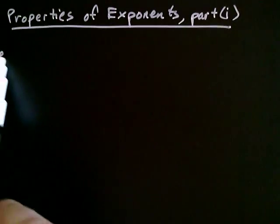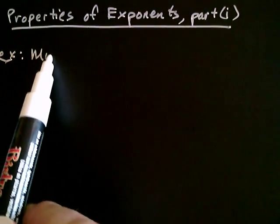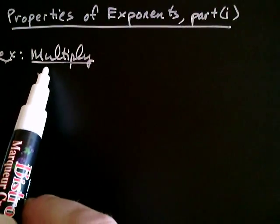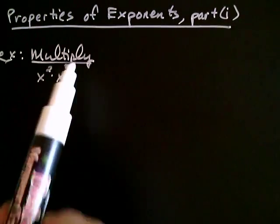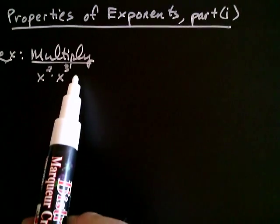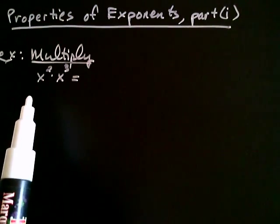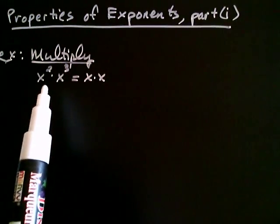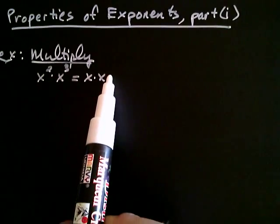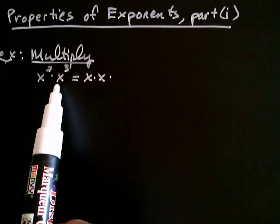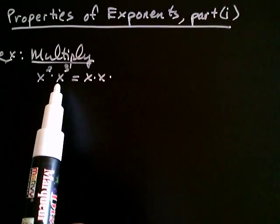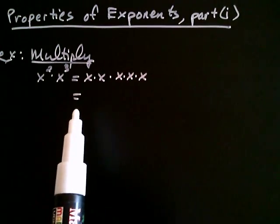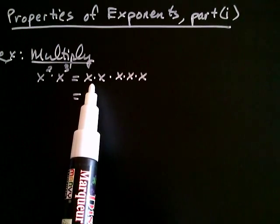Let's say, for example, that we wanted to multiply x squared by x to the third. If we think about what exponential expressions mean, x squared means x multiplied by x, and x to the third is x times x times x. What's important to notice is that at this stage, it's all multiplication.